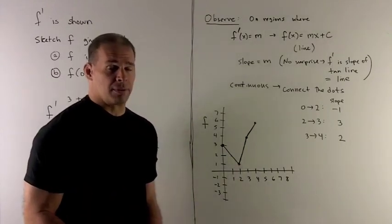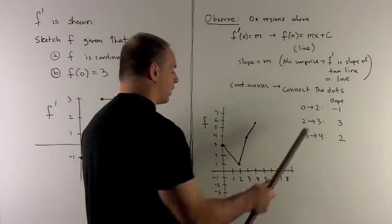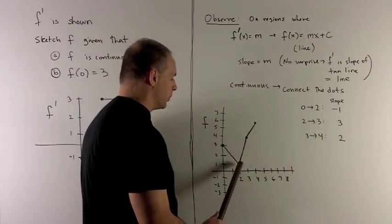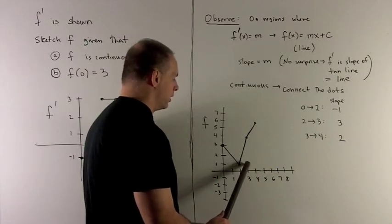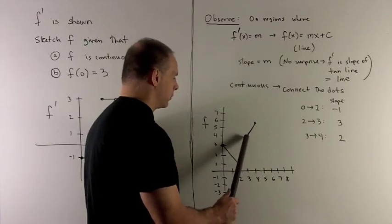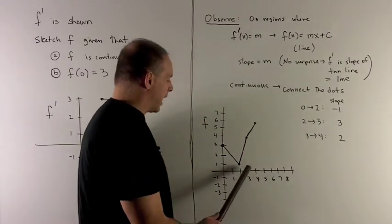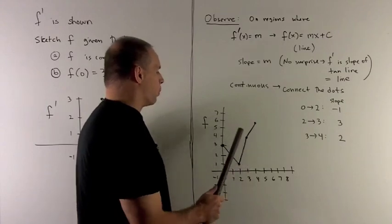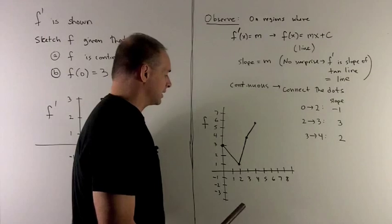As I move to the segment from 2 to 3, we notice that the slope is 3. So that'll mean if I start at my point 2, 1, slope equal to 3 says if I go over 1, then I have to go up 3. So that's going to wind up at 3 comma 4. Draw my line in, keeping the dots connected.